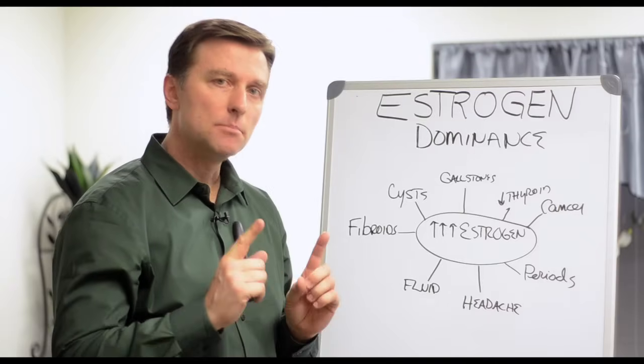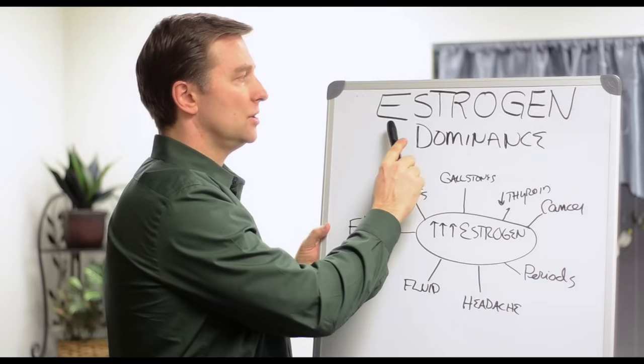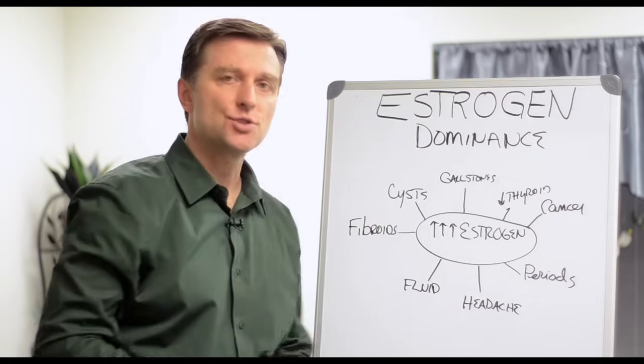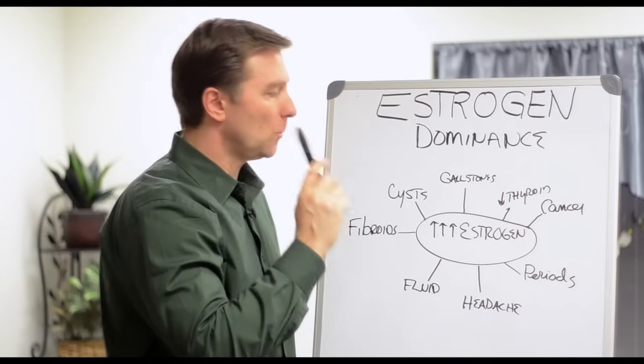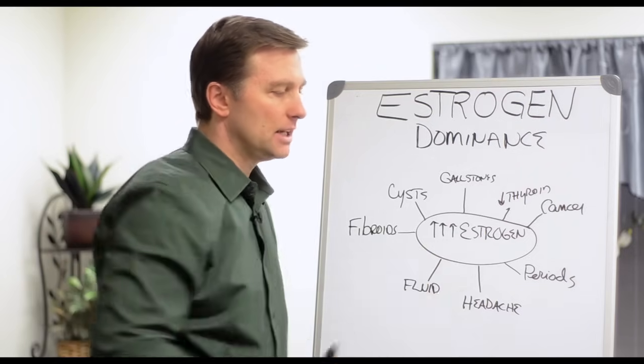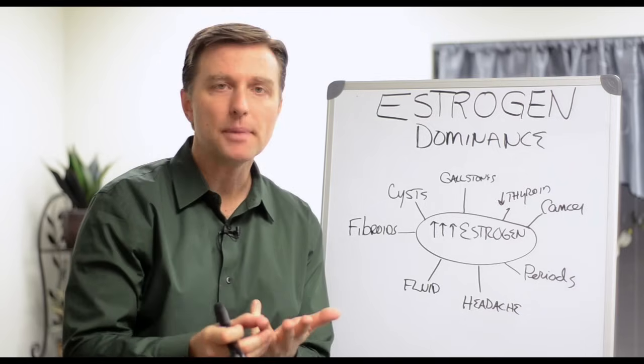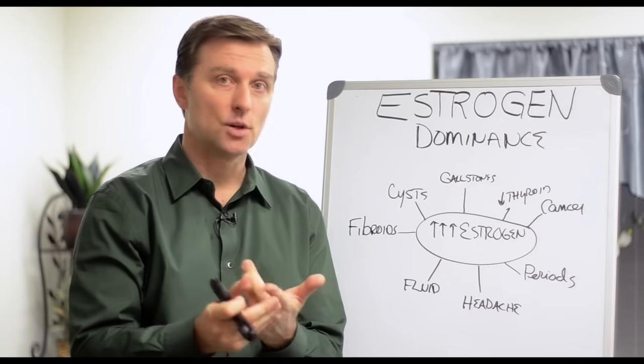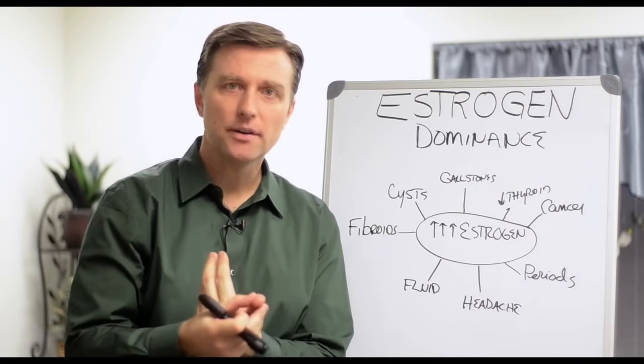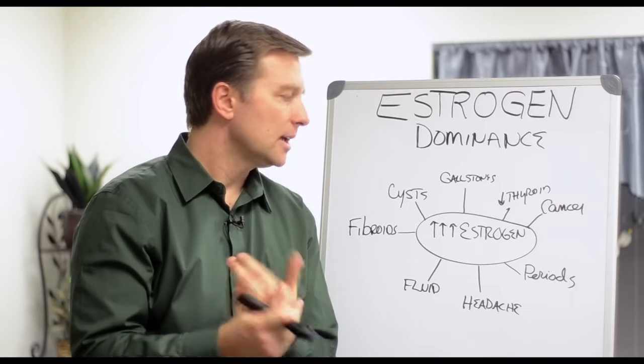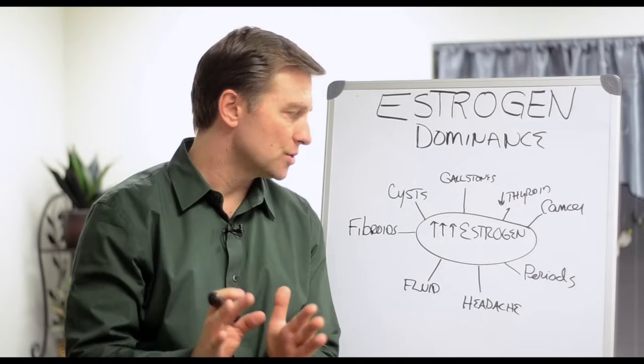Now, probably the most common problem with the ovary is the overproduction of estrogen. They call it estrogen dominance. It's too much estrogen. What happens with too much estrogen, you're going to get excessively heavy periods, cramping, no periods, irregular periods, irregular cycles, long periods, heavy bleeding. Every single problem with that period will be disrupted with too much estrogen.